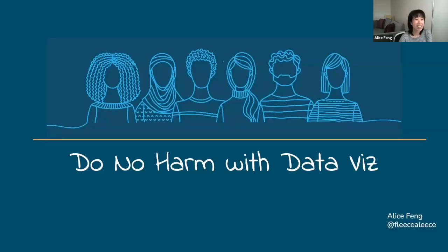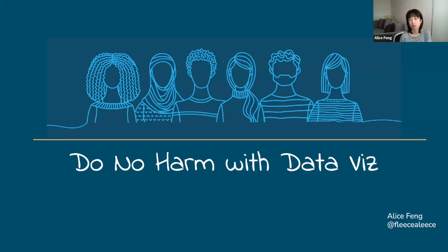Hello everybody, thank you so much for having me. My name is Al Spang and I'm a data visualization developer located in the Washington DC area. I'm really excited to be speaking with you all about some work I've been doing with my colleague John Schwabish over the past few years, looking at how we can do no harm with data viz by making sure that our charts and maps are created and designed with a diverse, equitable, and inclusive — or DEI — lens in mind. We recently published a Do No Harm Guide, a resource for how data visualizers, analysts, and communicators can ensure that how they're presenting data doesn't perpetuate stereotypes and biases.